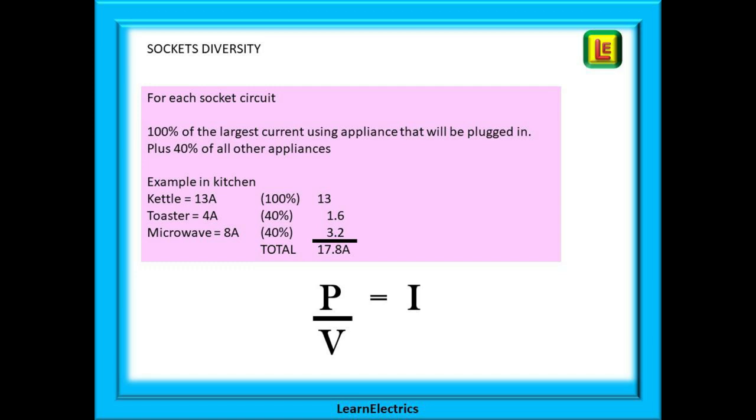In our example, we have the kitchen socket circuit. In use on a daily basis, we might have a kettle, a toaster, and a microwave. I will disregard the slow cooker; it's only used once a fortnight and only draws 100 watts. The kettle is easily a big user at 13 amps and frequently in use. So we'll allocate 13 amps to the kettle. For the toaster at 40% of 4 amps, we have 1.6 amps, and we'll include the microwave with 40% of 8 amps, giving 3.2 amps. Add them up, and diversity says to allow 17.8 amps for this circuit.